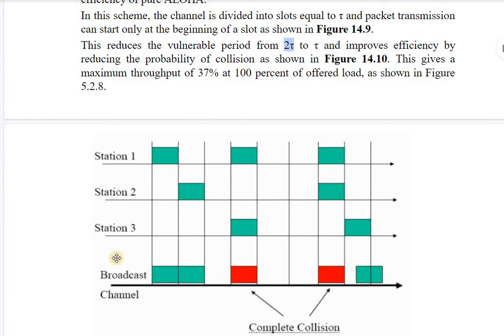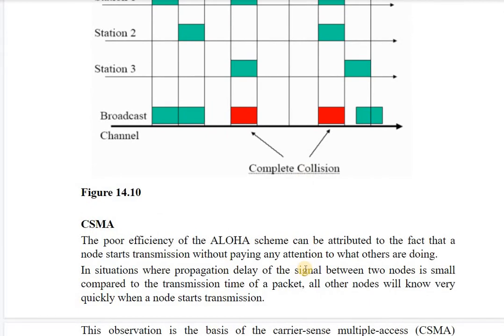In slotted Aloha, station 1 and station 2 send data in their respective slots. Collision is reduced to some extent — there will be no partial or incomplete collisions, only complete collisions at slot boundaries. Slotted Aloha gives a maximum throughput of 37% at 100% of offered load, which is far better than pure Aloha.